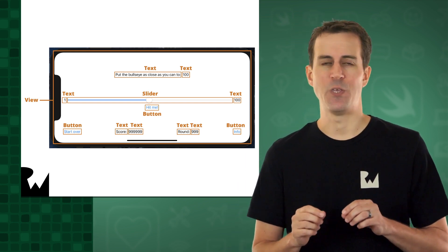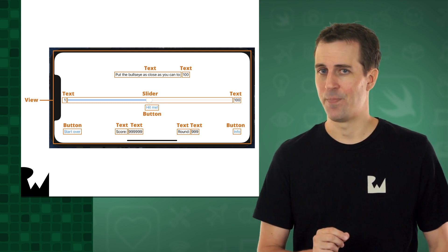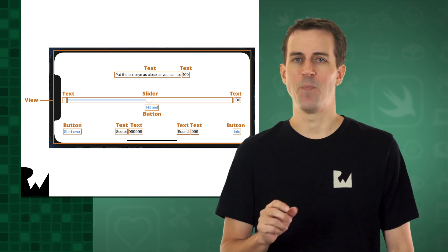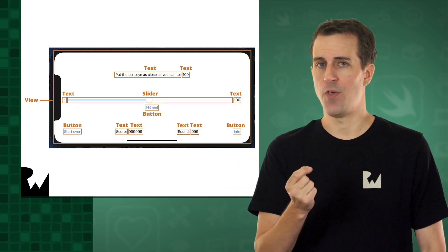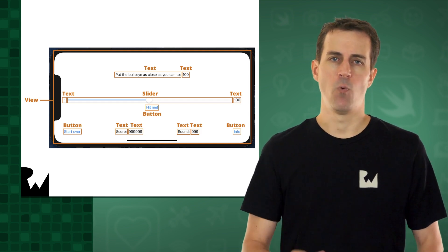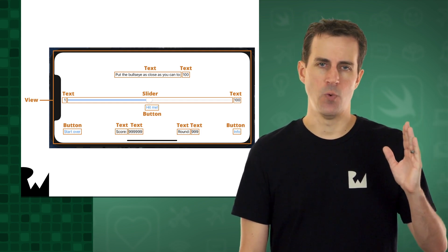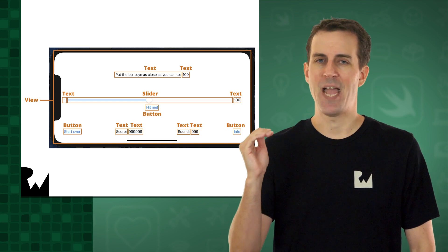Now you also may have noticed a control that you haven't worked with before, the slider. The slider lets the user enter a number by sliding a control, which is called a thumb, along a straight-line track, where one end represents the minimum value, and the other end represents a maximum value.